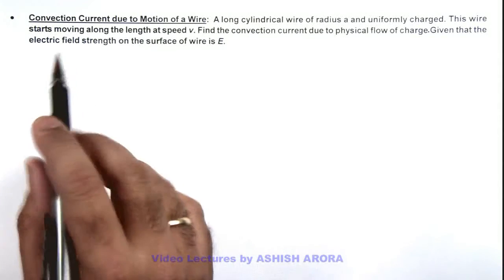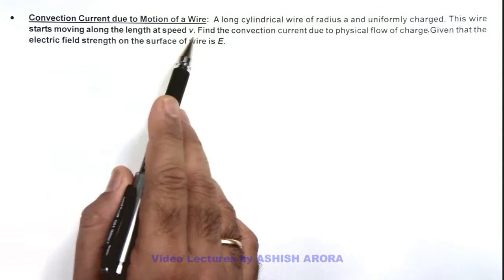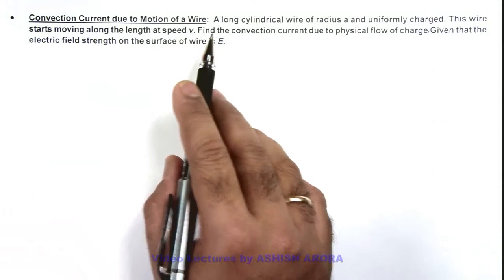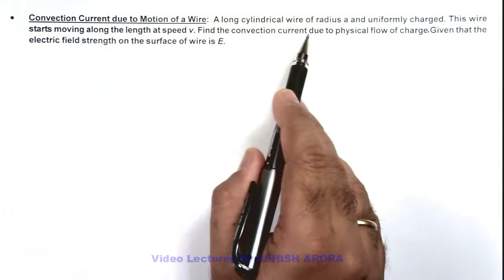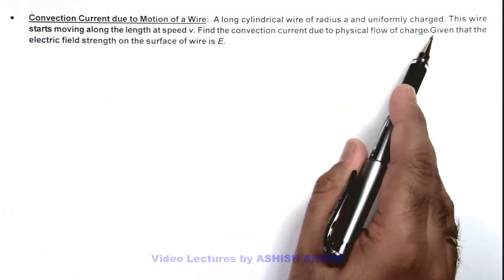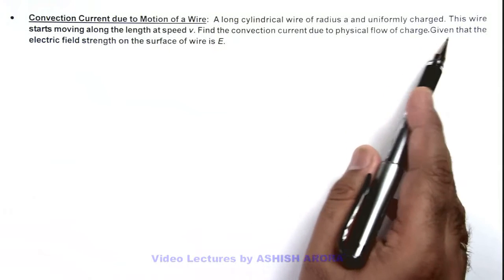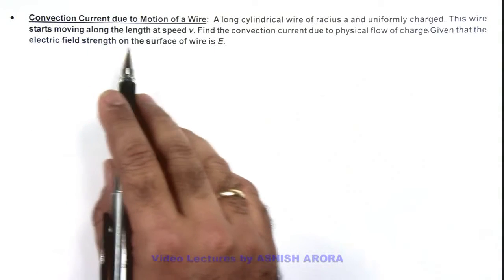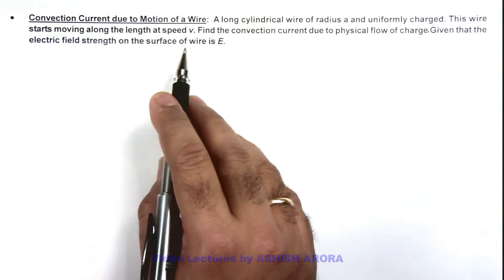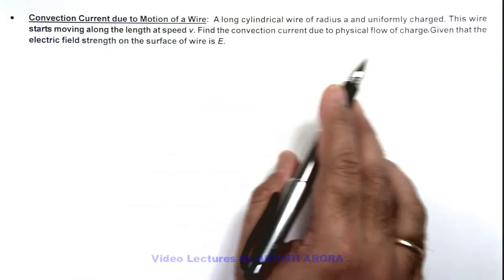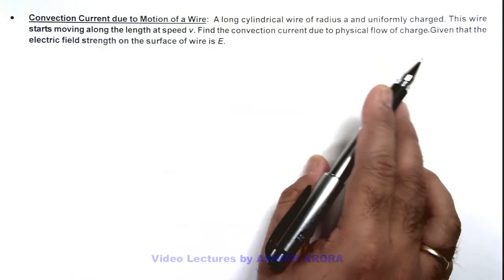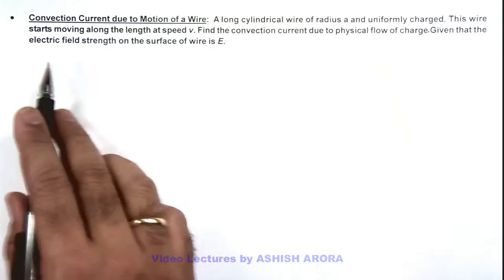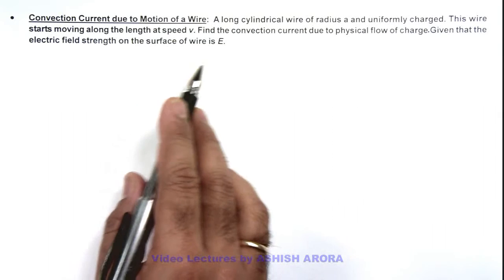In this illustration we'll discuss the convection current due to motion of a wire. A long cylindrical wire of radius a is uniformly charged. This wire starts moving along the length at speed v. We are required to find the convection current due to physical flow of charge. It is also given that the electric field strength on the surface of wire is E.